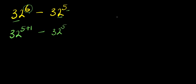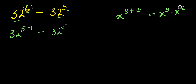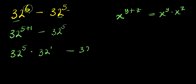Now, using the exponent rule: if you have x to the power (y+z), this equals x to the power y times x to the power z. So this gives us 32 to the power 5 times 32 to the power 1, minus 32 to the power 5.